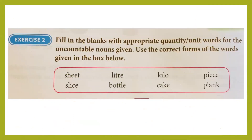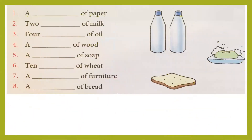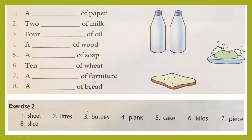Next exercise: fill in the blanks with appropriate quantity words used for uncountable nouns, using the correct forms of words given in the box. The units include: litre (for milk or water), bottle (for liquids like juice or sauce), kilogram (for things weighed by kg), piece, plank, and slice (for bread). Number 1, a blank of paper — which unit will you use? Number 2, two blanks of milk — which unit of measurement for milk?